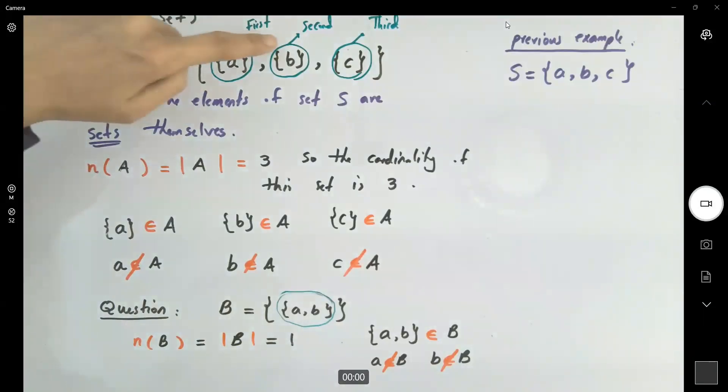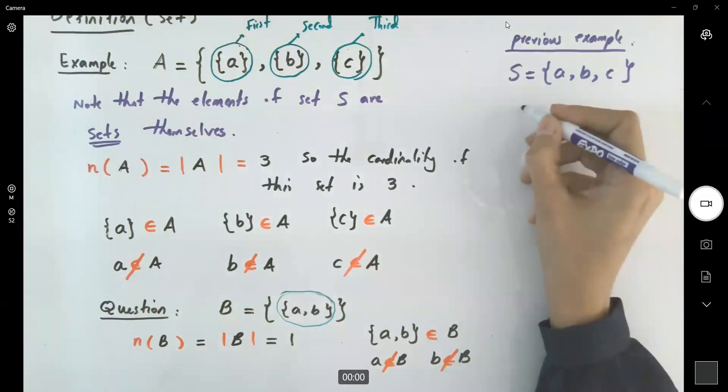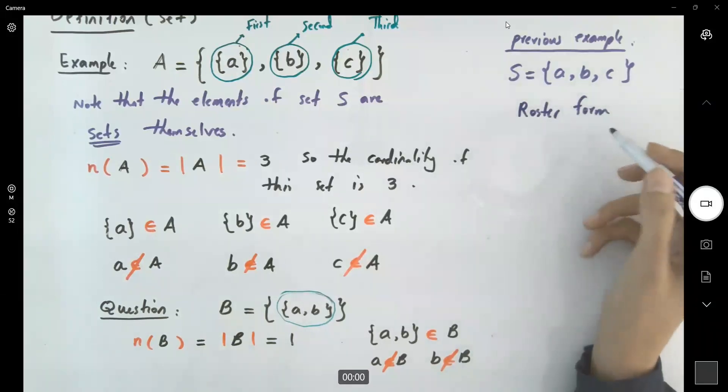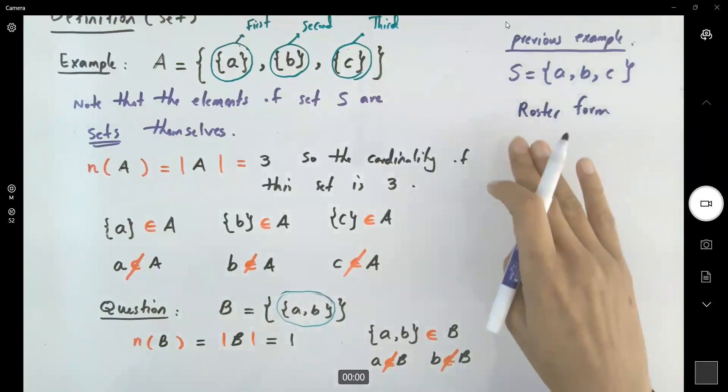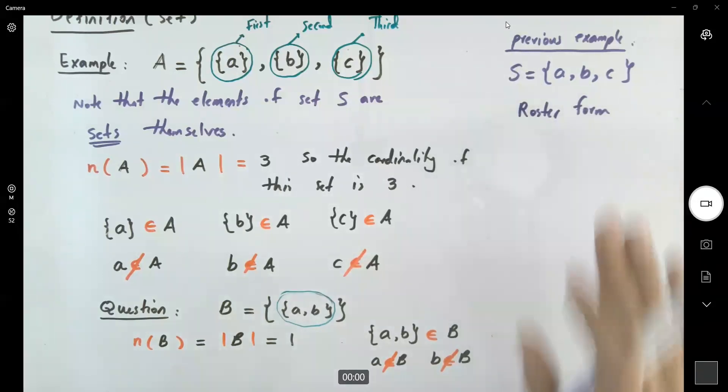Sometimes it's not possible to just list the elements of the set or write it in roster form. When you list the elements, you have the roster form for that set. Sometimes the cardinality of the set is so huge that you're not able to list all the elements. What are you going to do? You're going to use the set definition.